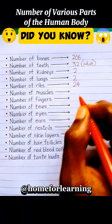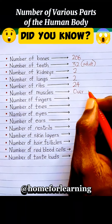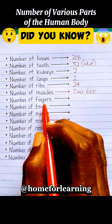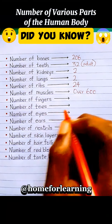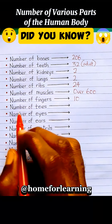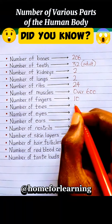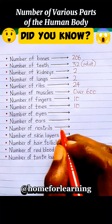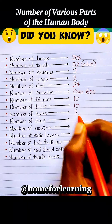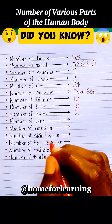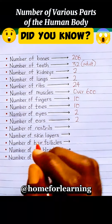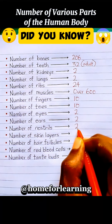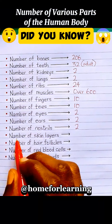Number of muscles: the number of muscles in the human body is over 600. Number of fingers: the number of fingers is also ten. Number of eyes: two. Number of ears: also two. Number of nostrils: also two.